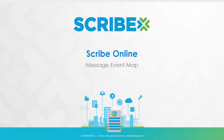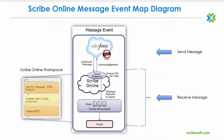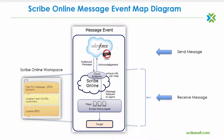Similar to the ScribeOnline request-reply map, the ScribeOnline message event map is also created by means of an integration event solution. ScribeOnline message event map has many fundamental similarities when compared to a request-reply map. For example, both map types produce and send a unique data payload to a URL endpoint which in turn is received by ScribeOnline for subsequent processing and integration into the target application or database.